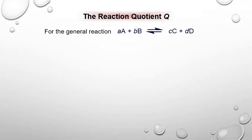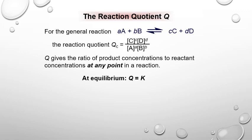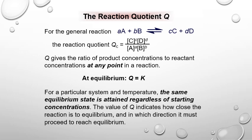The reaction quotient Q sets up the same way as K for any general reaction. It is the ratio of the products to the reactants at any point in a chemical reaction — typically non-equilibrium conditions. However, when a reaction is at equilibrium, Q would equal the value for K. For any particular system and temperature, equilibrium is attained regardless of starting concentrations. So the value of Q indicates how close the reaction is to equilibrium and in which direction the reaction must proceed to reach equilibrium.